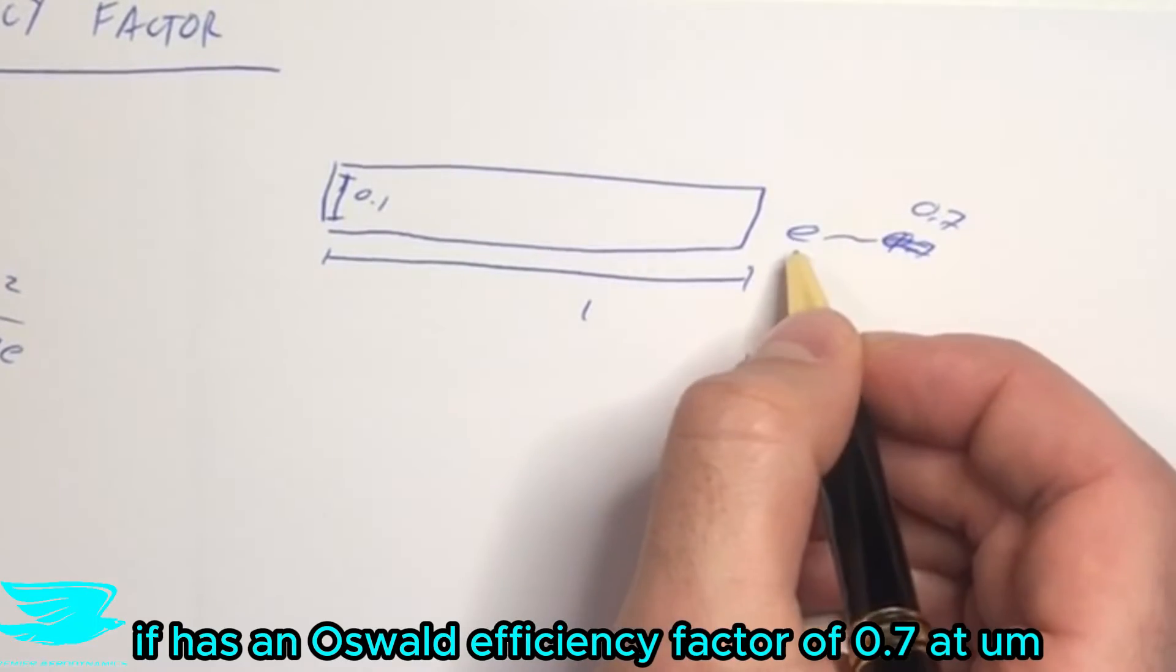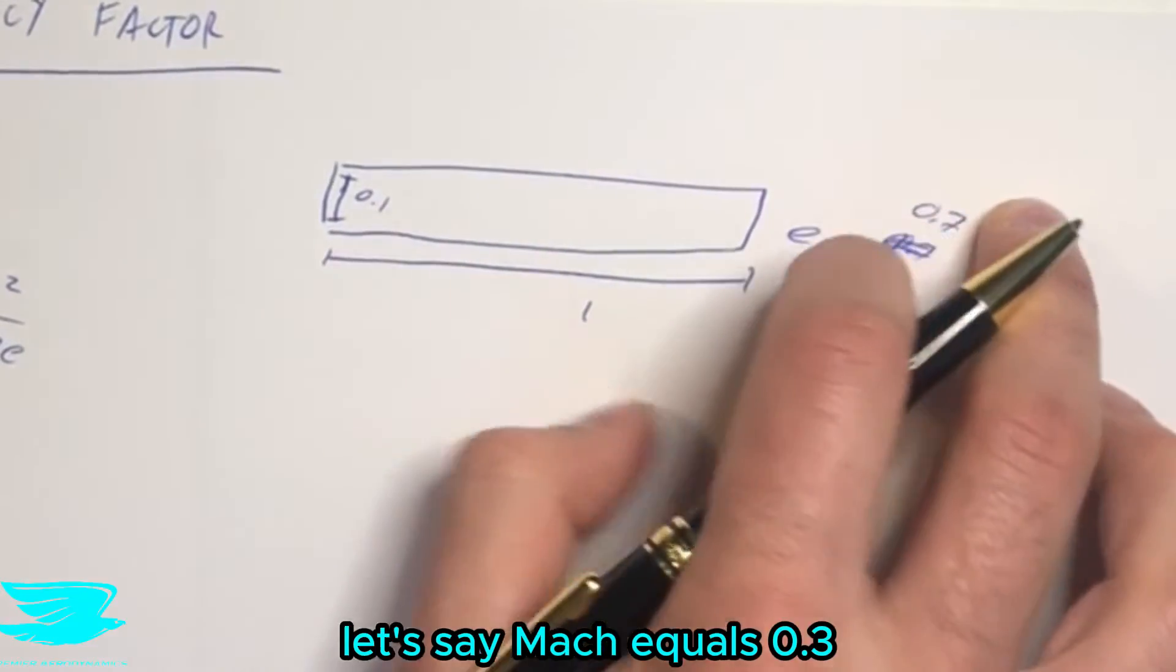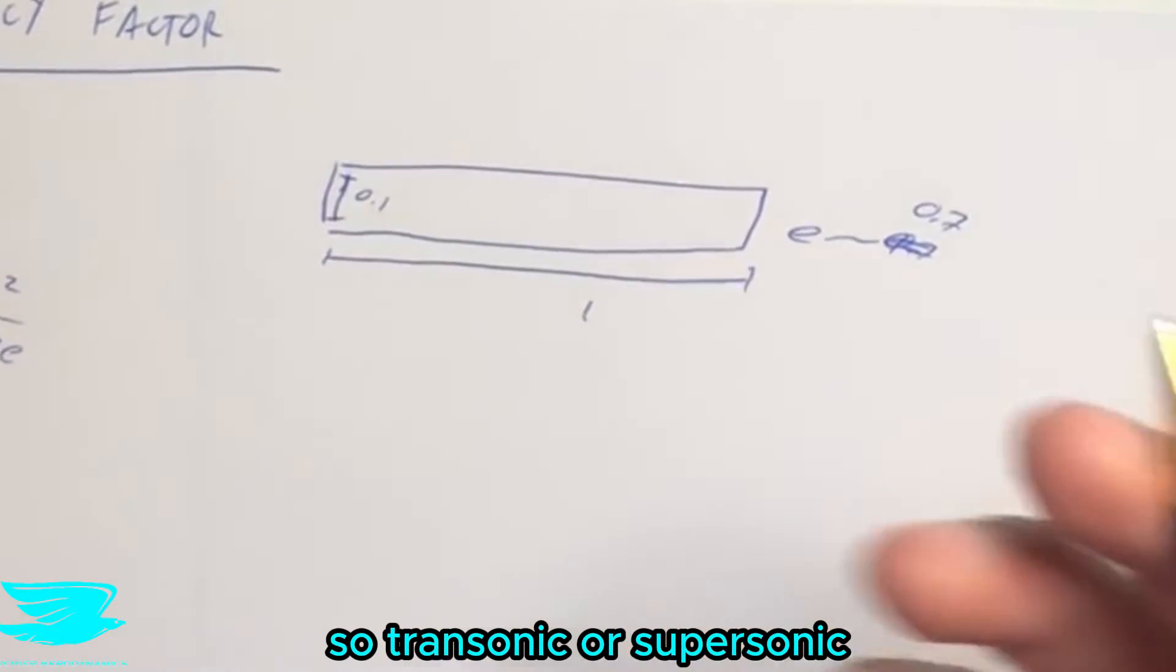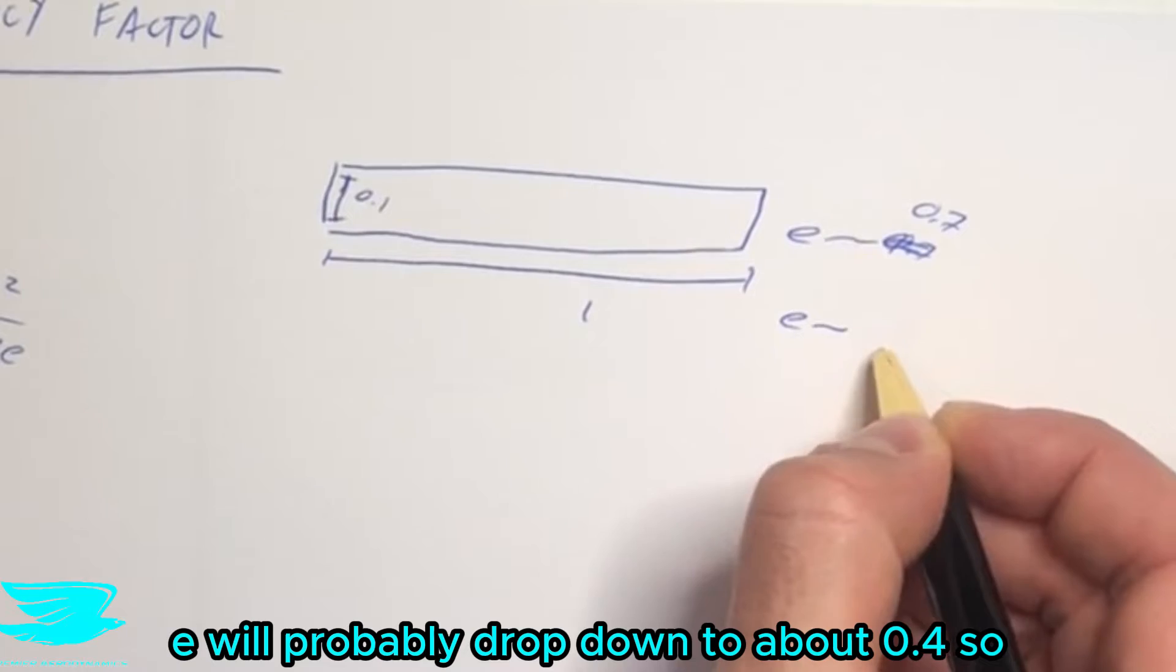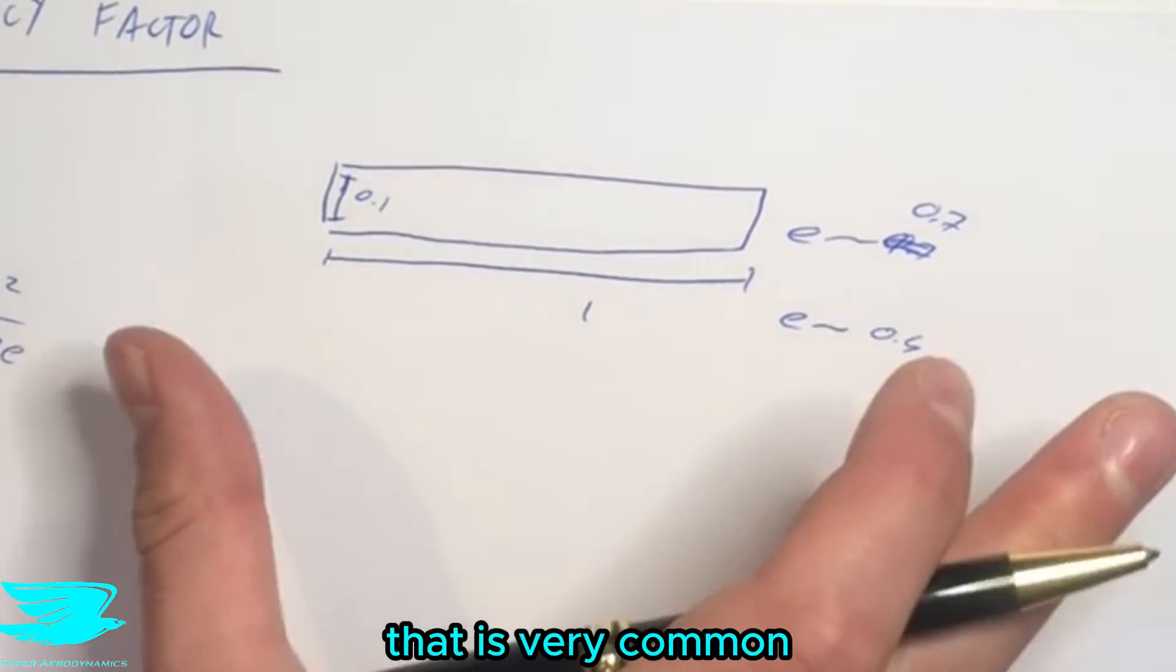So for example, this wing here, if it has an Oswald Efficiency Factor of 0.7 at subsonic speed, so let's say Mach equals 0.3, if we go to Mach above one, so transonic or supersonic, E will probably drop down to about 0.4 or so, so definitely below 0.5. So that is very common.